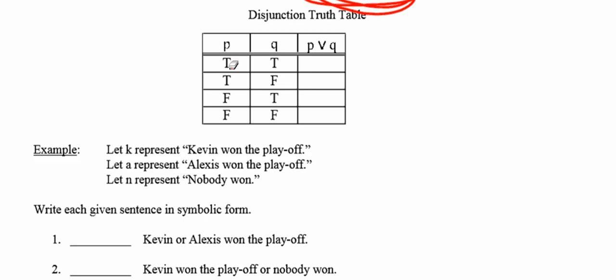In the truth table for disjunction: when P is true and Q is true, we have at least one true statement, so the disjunction is true. When P is true and Q is false, at least one is true — disjunction is true. When P is false and Q is true, at least one is still true — disjunction is true. Only when both statements are false do we lack at least one true statement, making the disjunction false.